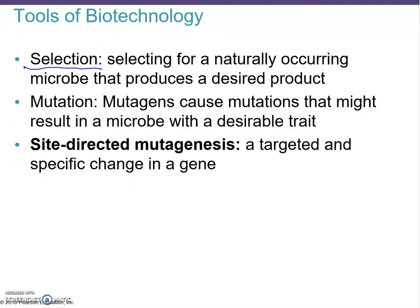Selection is important because not every bacterium will pick up the plasmid you want, so you need to select for organisms that have taken up the recombinant DNA and produce the desired product. A mutation is a change in genetic material; you can use mutagens to accelerate mutations and select for microbes with desirable traits. Site-directed mutagenesis is targeted mutation of a specific gene in an organism.